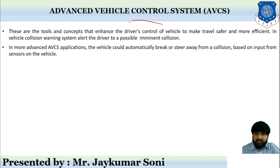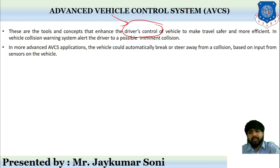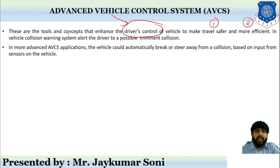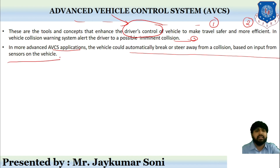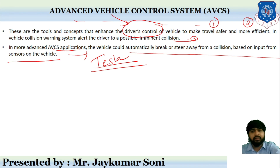The Advanced Vehicle Control System includes tools and concepts that enhance the driver's control of the vehicle to make travel safer and more efficient. An in-vehicle collision warning system alerts the driver about a possible imminent collision. In more advanced AVCS applications, the vehicle could automatically brake or steer away from the collision based on input from sensors — as observed in Tesla cars and many others.